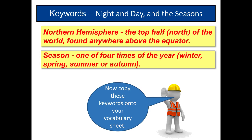That's the end of this video. Let's do some key words. Northern Hemisphere is the top half or north of the world, found anywhere above the equator. And season — one of four times a year: winter, spring, summer, or autumn. Copy these keywords into your vocab sheet.